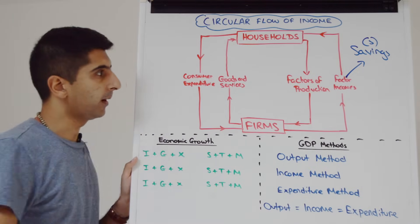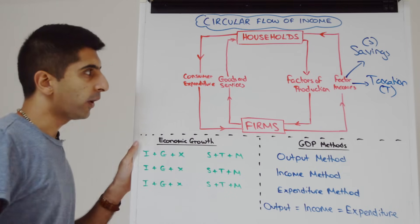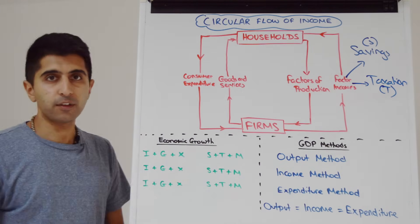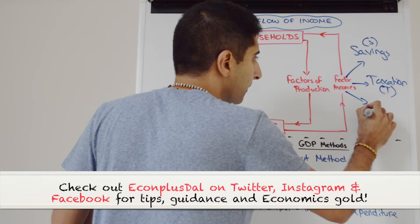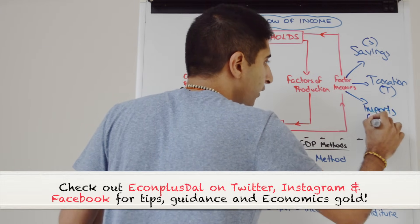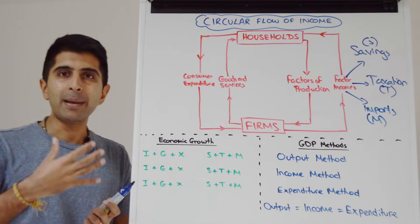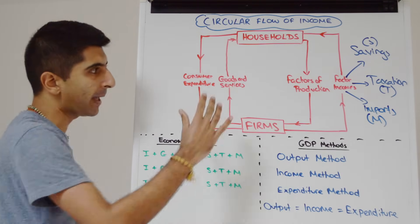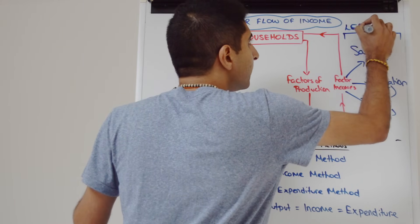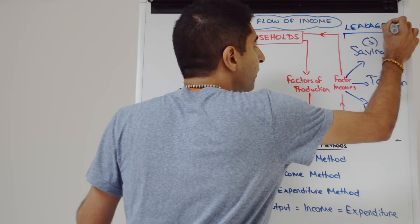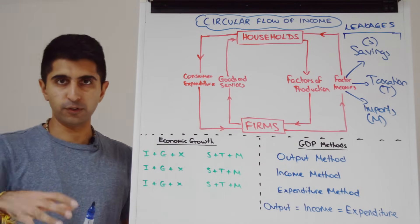What else could happen to our income? It could be taxed away — introducing government. Taxation, known as T. What else? We don't have to spend our incomes on goods and services made in our own economy; we could spend some on goods and services made abroad — import spending, known as M. So S, T, and M are known as leakages, or withdrawals, from the circular flow — ways in which income can exit the economy without being spent on domestically produced goods and services.